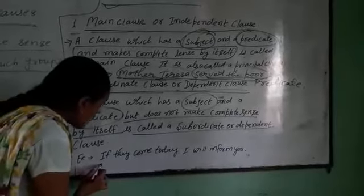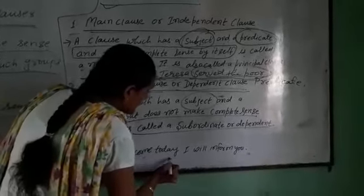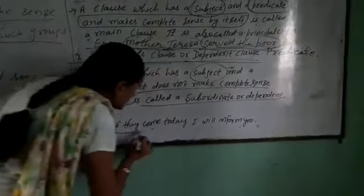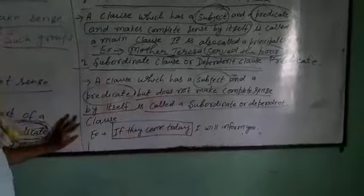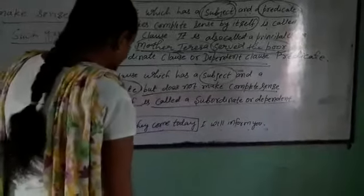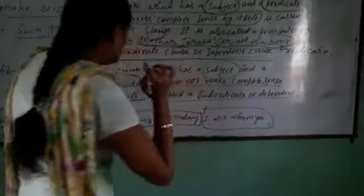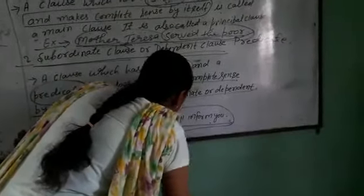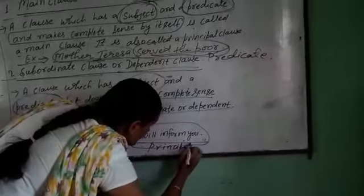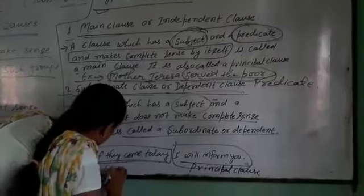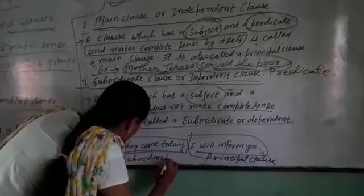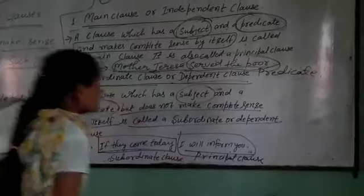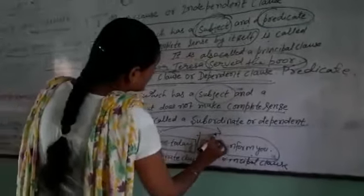Look at the sentence: 'If they come today, I will inform you.' The sentence 'I will inform you' is the principal clause, and 'if they come today' is the subordinate clause, because this sentence is dependent on the other sentence.